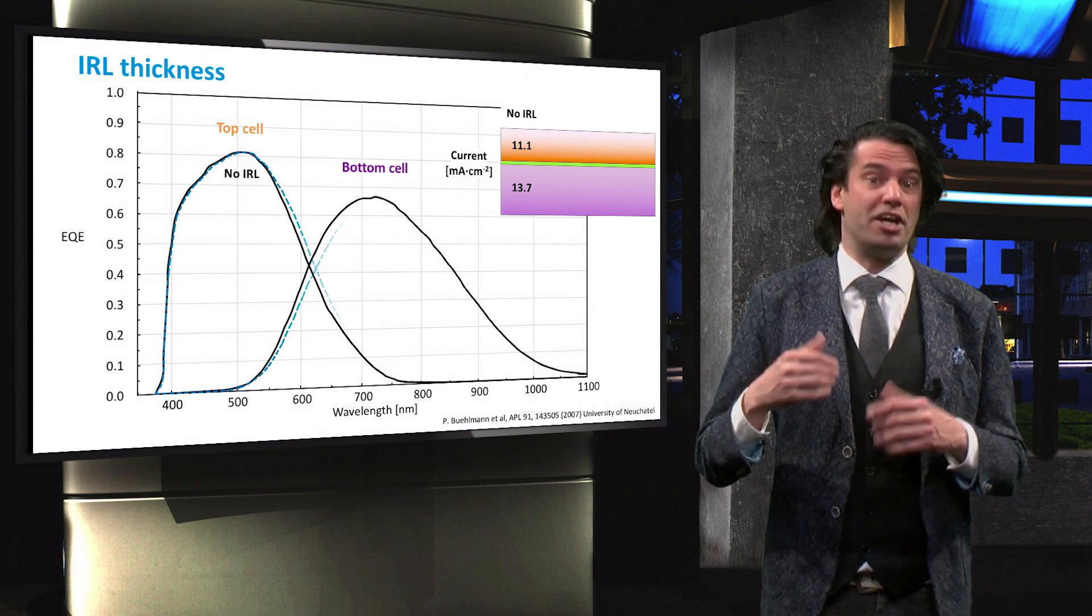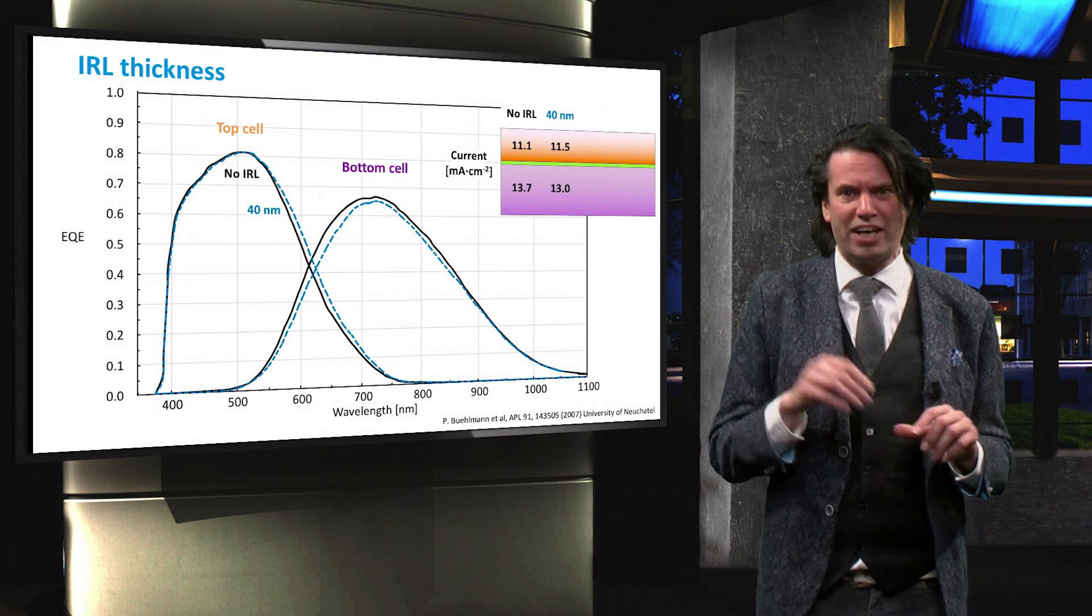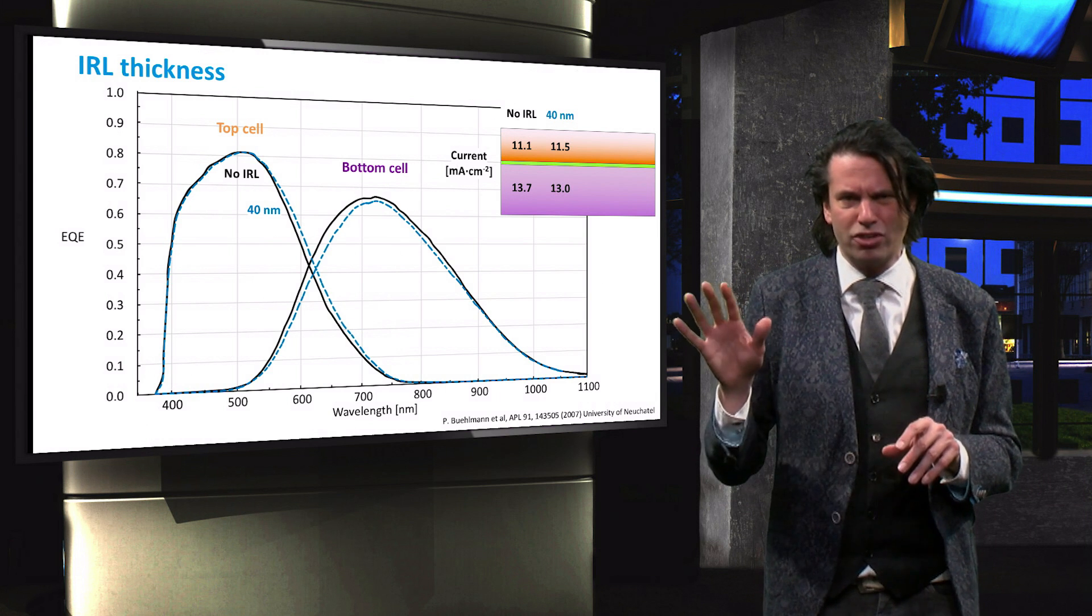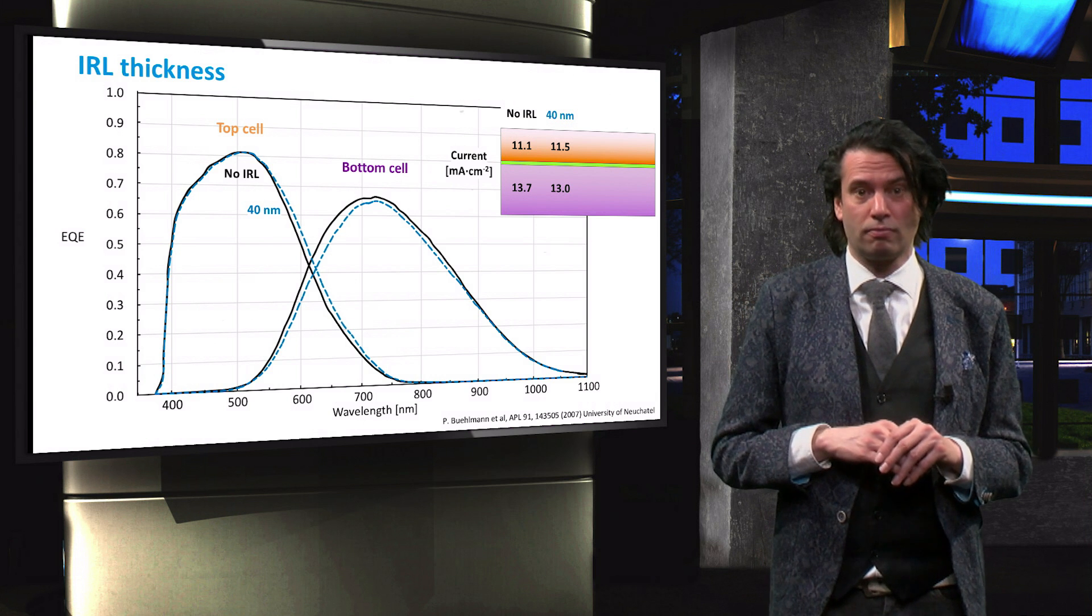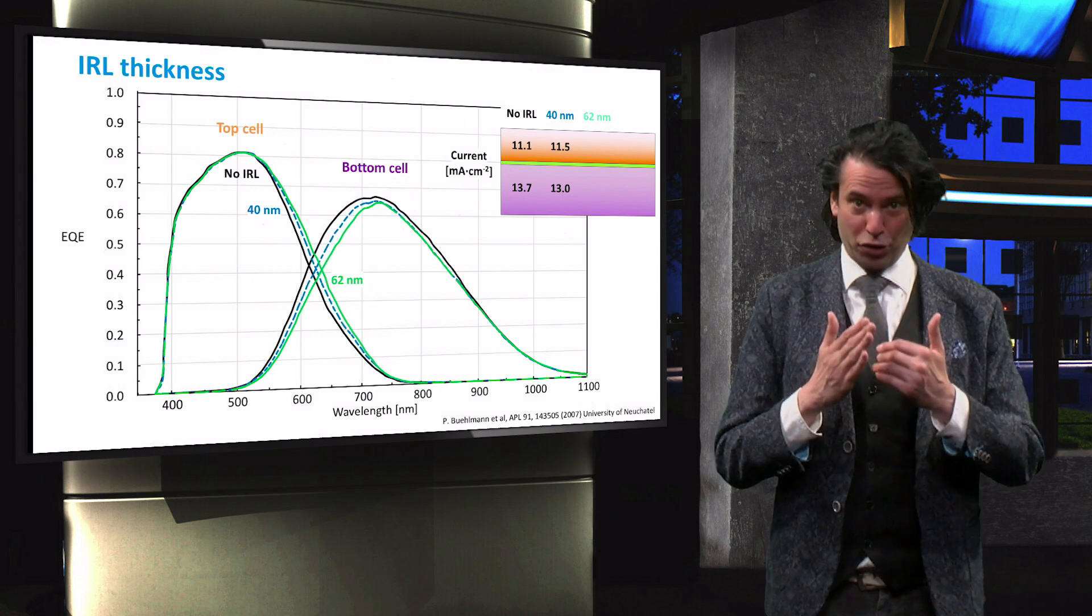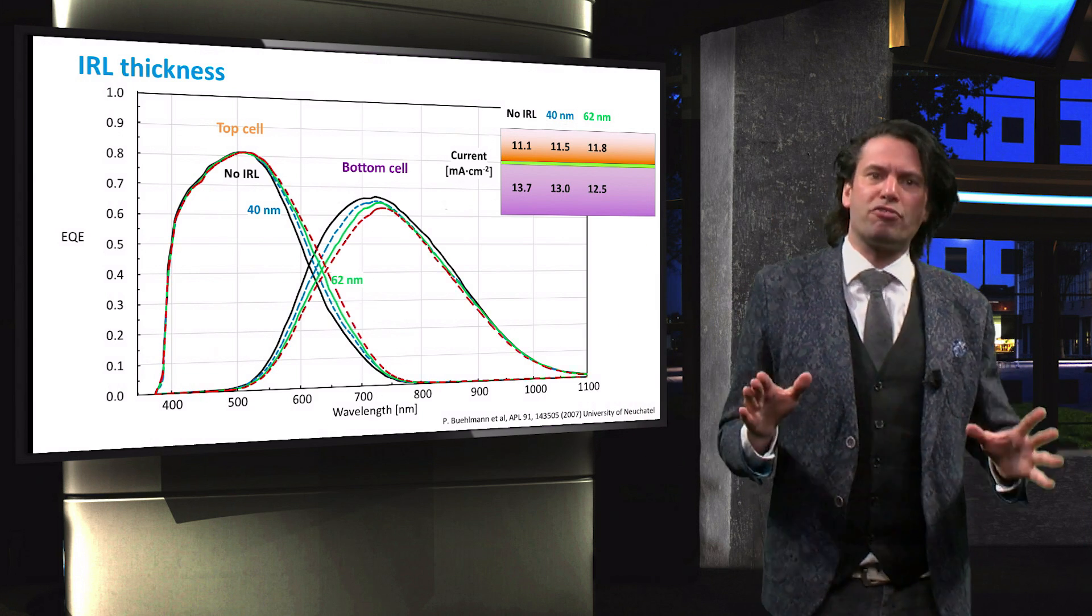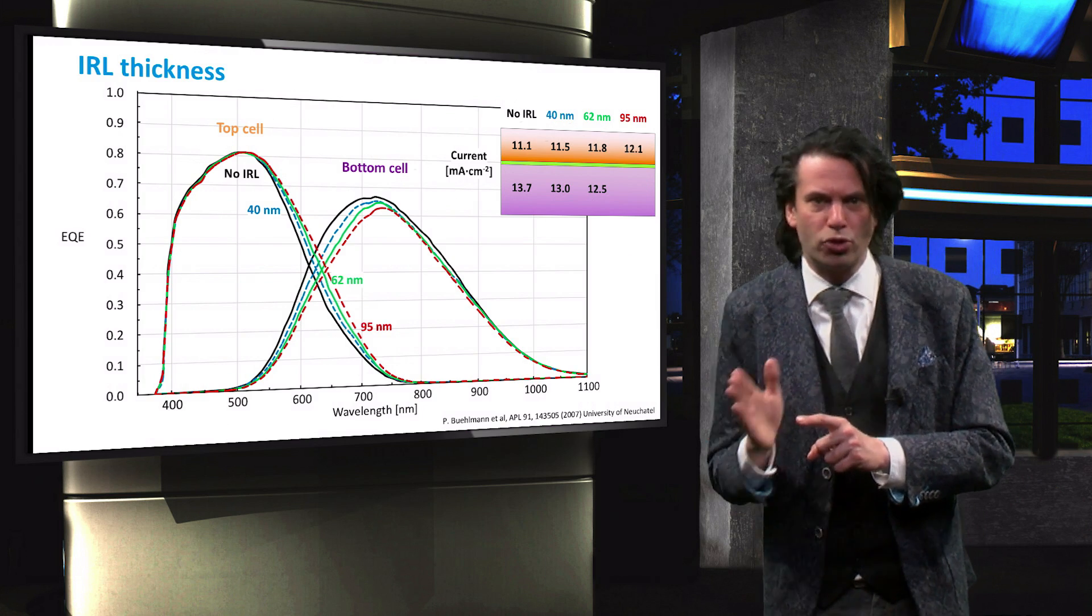Now an intermediate reflective layer is introduced with a refractive index of about 2.1 at 600 nm and a thickness of 40 nm. As the thickness of the intermediate reflective layer increases to 62 nm and 95 nm, the current transfer from the bottom to the top cell increases as well. Current matching between different cells in a multijunction device does not only affect the output current of the device, as you will see in the next video.